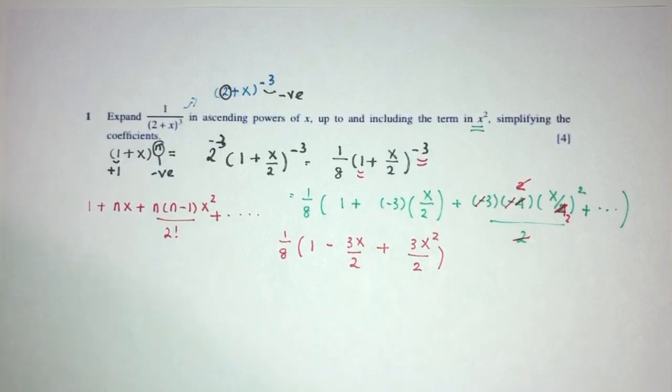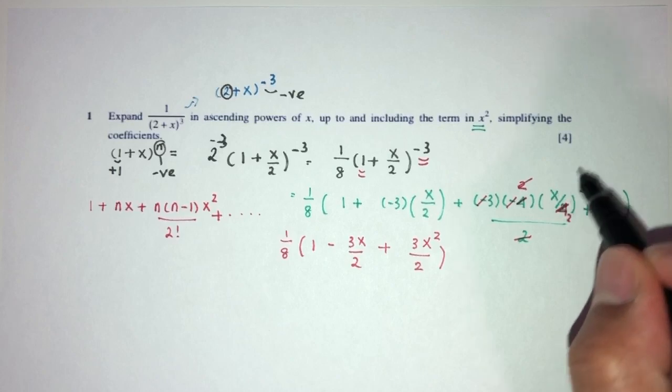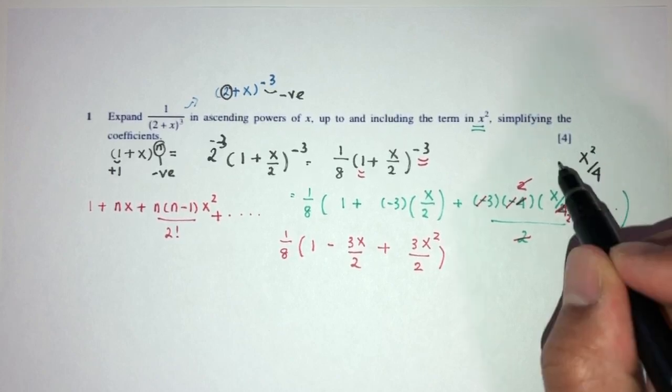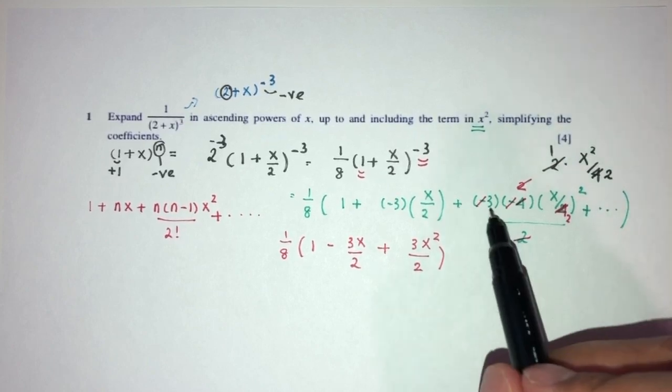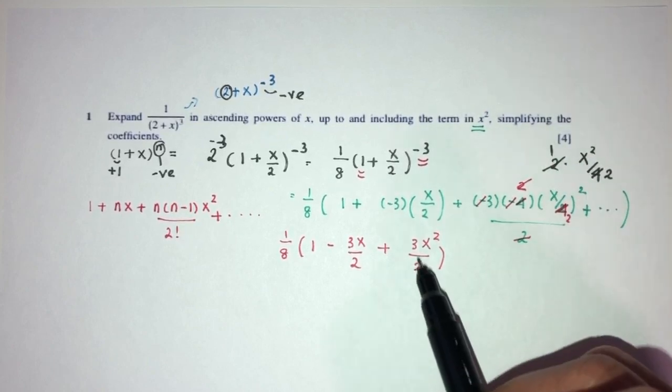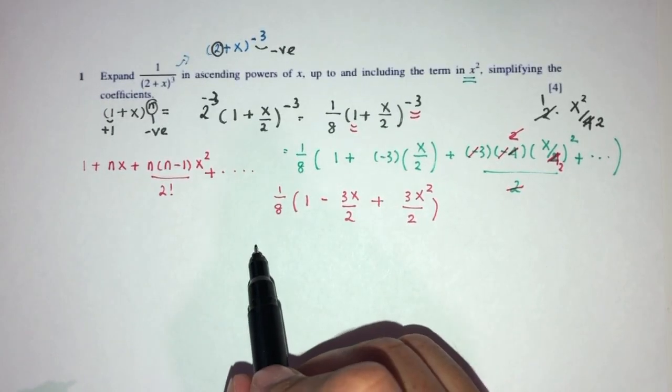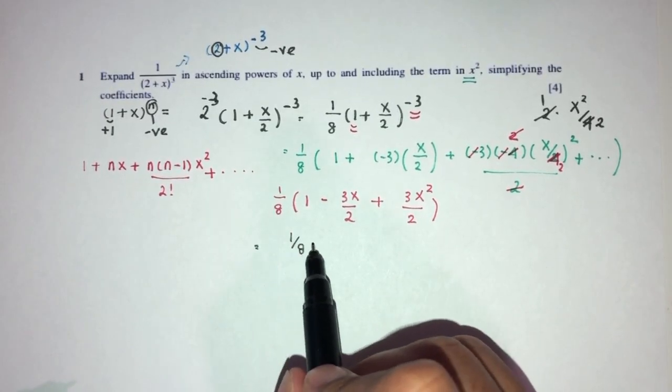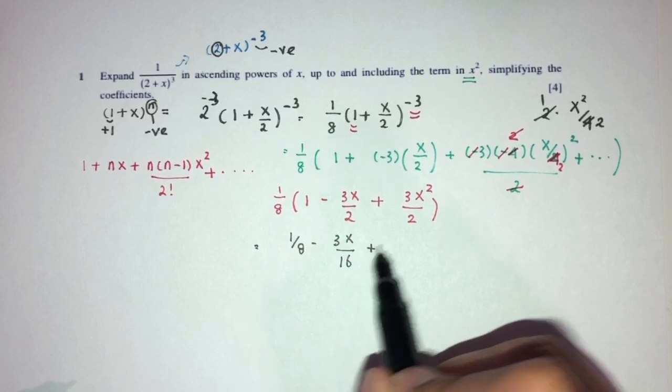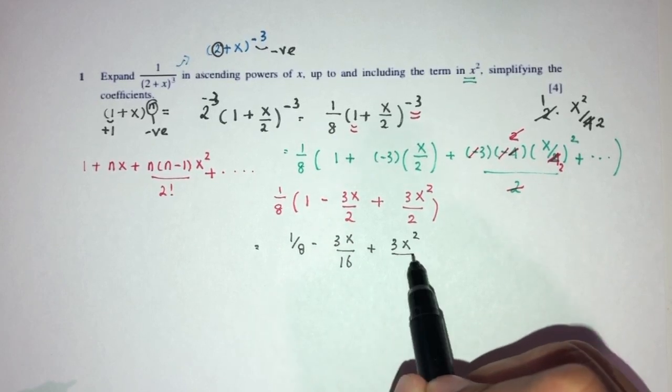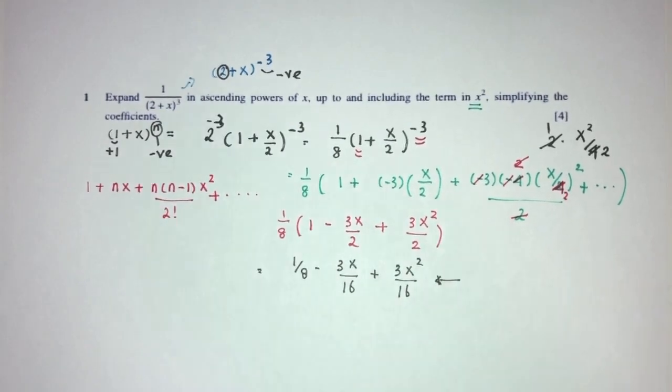Let me explain that again because I don't want to confuse you guys. Here we have 2 remaining, and here when you expand, you will have x squared over 4. So 2 times this, that will be 1, and that will be 2. Now 3 times this will be 3 over 2x squared. Now we just have to expand, that will be 1 over 8 minus 3x over 16, and plus 3x squared over 16. And that is your question number 1 for binomial expansion.